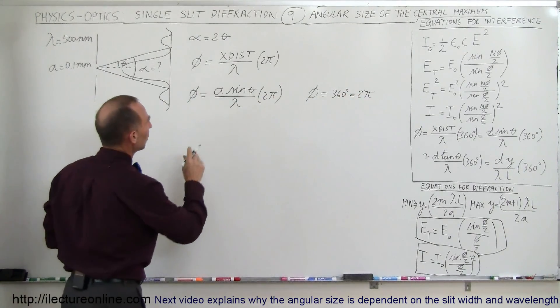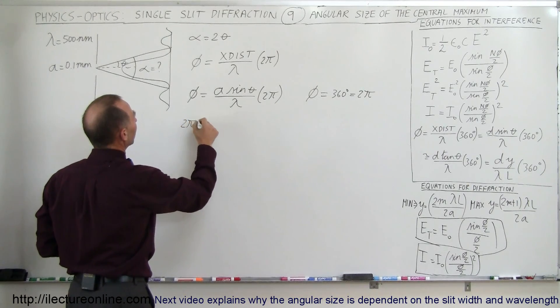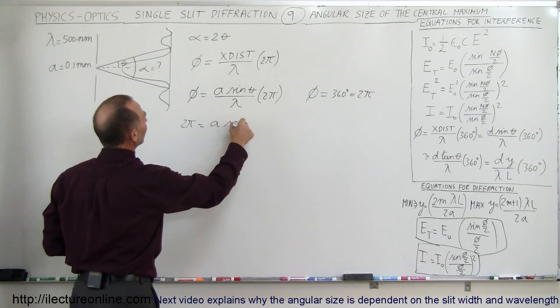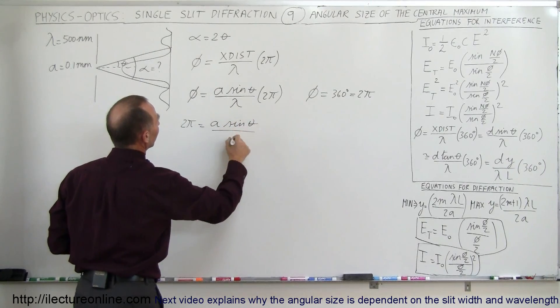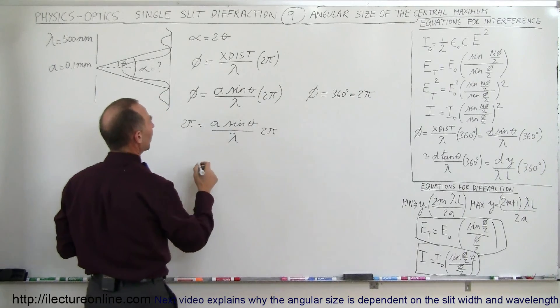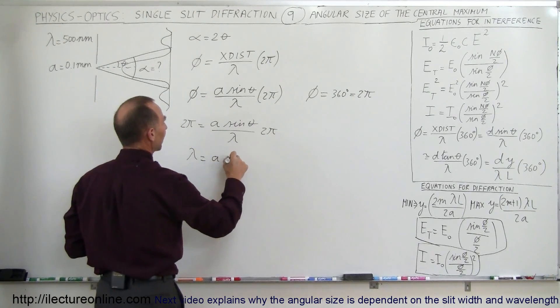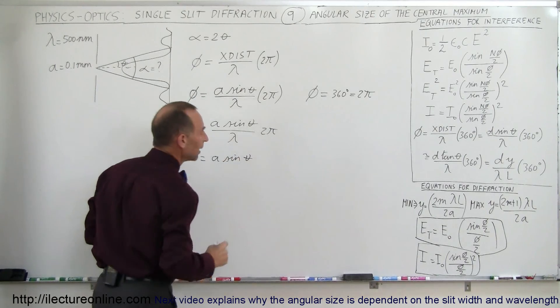So what we then have is 2 pi equals a times the sine of theta divided by lambda times 2 pi, and of course then 2 pi cancels on both sides. We can bring lambda across, we have lambda equals a times the sine of theta.